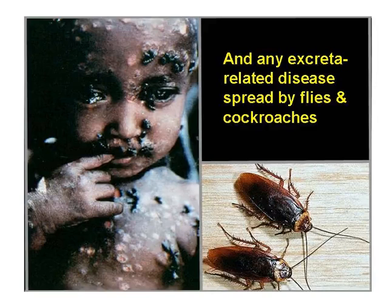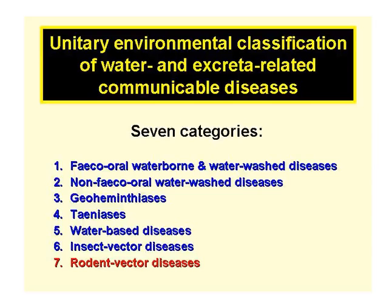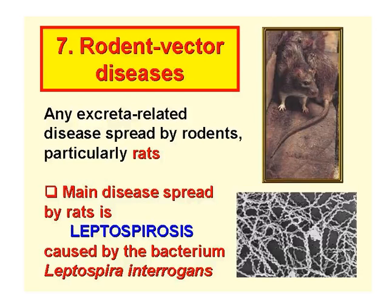Included in this category of water and excreta related diseases are any of the excreta related diseases which can be spread by flies or cockroaches. The seventh and final category comprises the rodent vector diseases — any excreta related disease which can be spread by rodents and especially by rats. The principal disease spread by rats is leptospirosis, which is caused by the spiral shaped bacterium Leptospira interrogans.